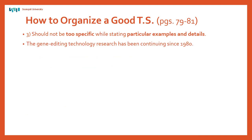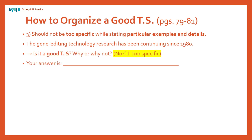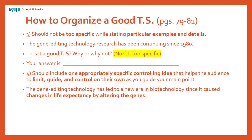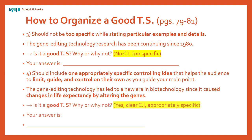Number three: it should not be too specific by stating particular examples and details. 'The gene editing technology research has been continuing since 1980' — that's too specific. You don't need to put a specific date in the topic sentence; you can do that later in the supporting sentences. Number four: it should include one appropriately specific controlling idea. Example: 'The gene editing technology has led to a new era in biotechnology since it caused changes in life expectancy by altering the genes.' Is it a good topic sentence? Yes — clear controlling idea, appropriately specific. Use number four as a reference for a good topic sentence.